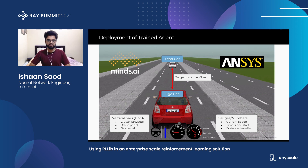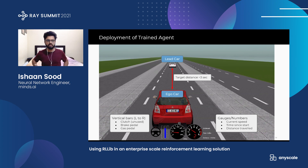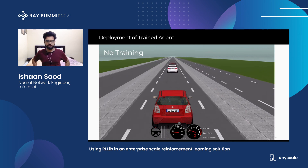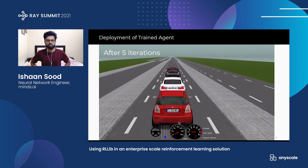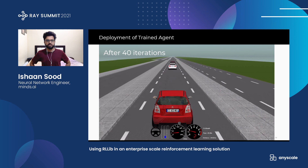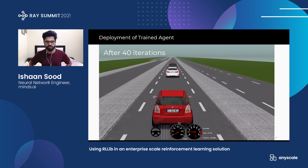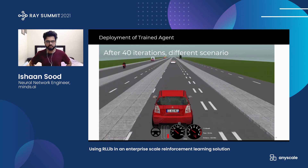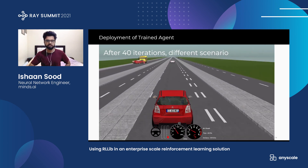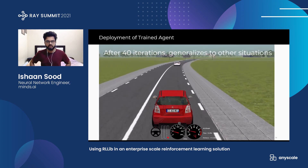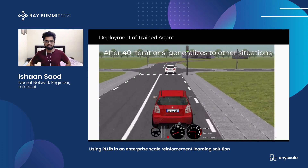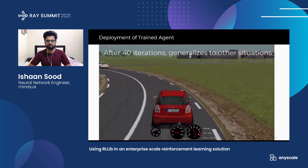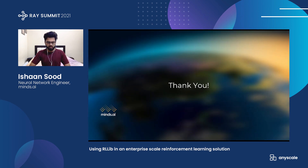Let's see the deployed agent in action on the real simulator. The simulator shows three pedals — clutch (unused), brake, and gas pedal. Without training, the agent takes no action and the car crashes into the lead car. After five iterations of training, the agent has learned to apply the brake and stops just before the lead car. After 40 iterations, it maintains a safe distance and stops about 15 meters from the lead car. In a different scenario, the agent varies acceleration depending on the lead car's speed and follows it smoothly. In varying scenarios where the lead car stops mid-way, the agent follows and maintains a very safe distance. The agent has generalized to very different situations. Thank you all for joining in, have a great day.